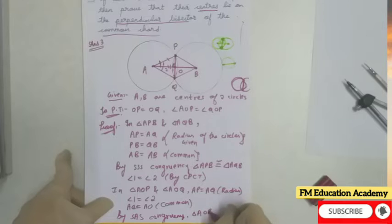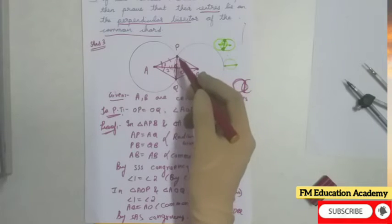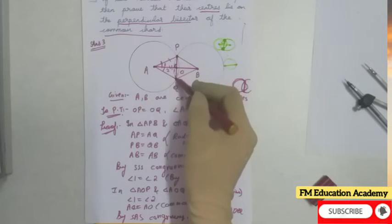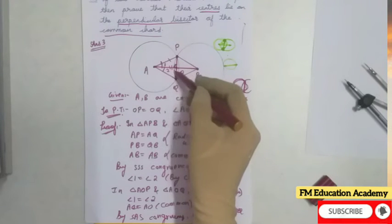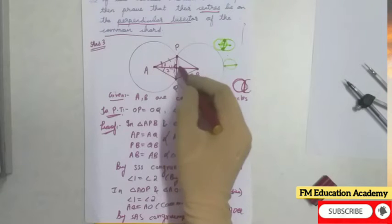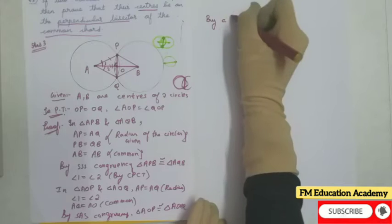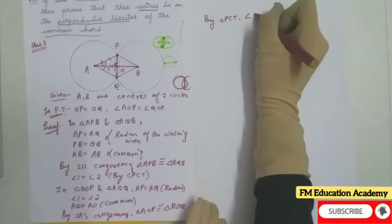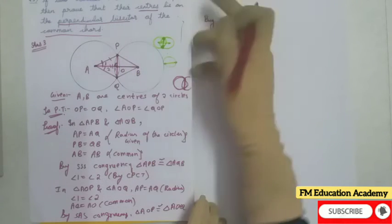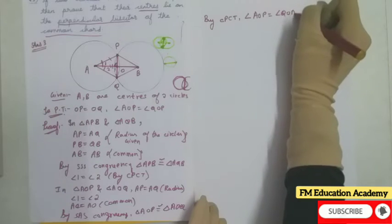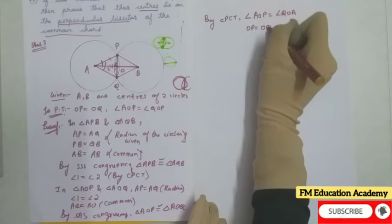Triangle AOP is congruent to triangle AOQ. By CPCT I can say angle POA equals angle QOA, and also OP equals OQ by CPCT. So the bisector part is proved — OP equals OQ.